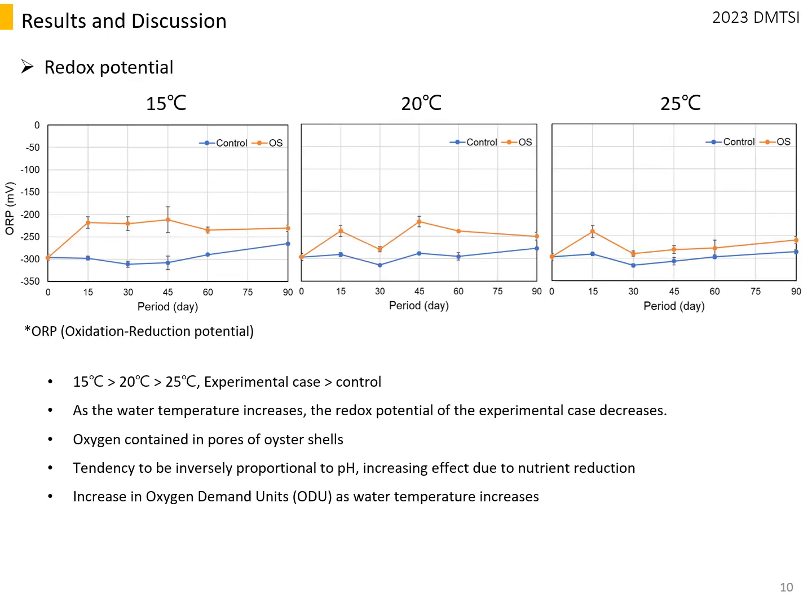The redox potential is considered more reduced as it becomes more negative. The redox potential of the experimental cases was always less negative than that of the control, which may have been partially affected by oxygen in the pores of the oyster shell. The redox potential of the control was almost similar across temperatures, but differences occurred in the experimental cases — as water temperature increased, the reduced state of the experimental cases became more severe.